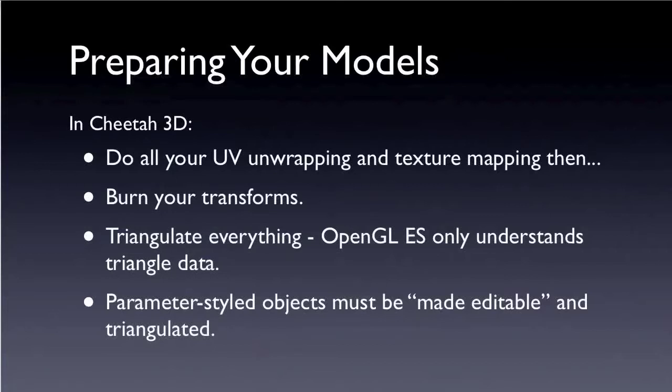In Cheetah 3D, you want to make sure you do all your UV unwrapping and texture mapping. When you feel like that's accomplished, then you want to burn your transforms. After that, triangulate everything, because OpenGL ES only understands triangle data. And any parameter-styled objects must be made editable and triangulated.